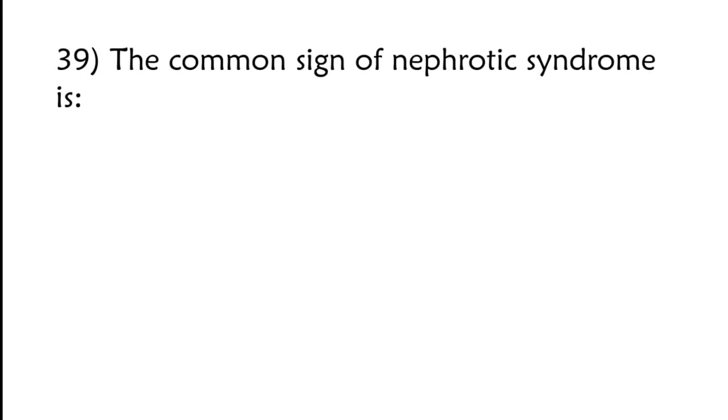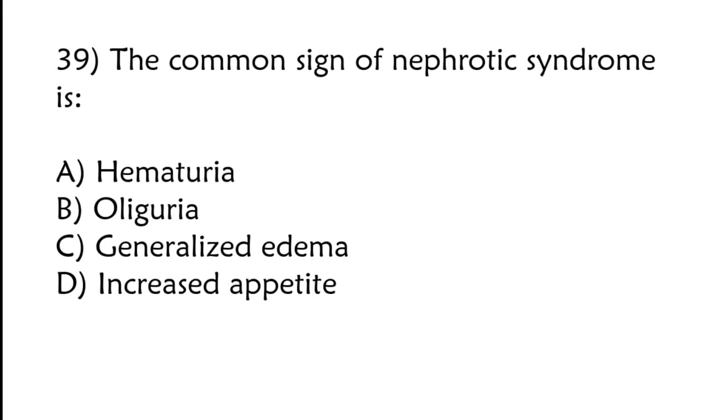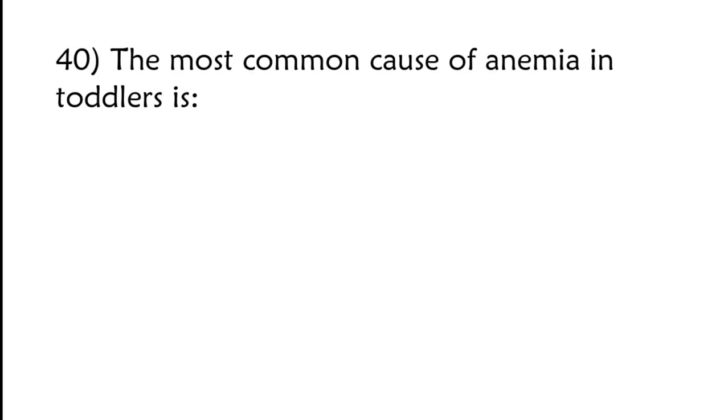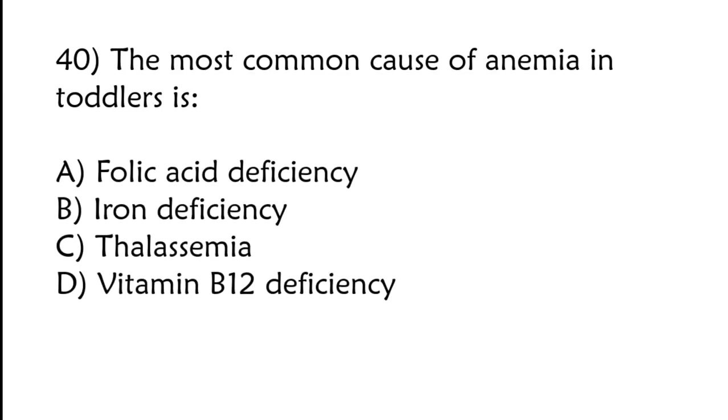The common sign of nephrotic syndrome is hematuria, oliguria, generalized edema, increased appetite. Correct answer is option C, generalized edema. The most common cause of anemia in toddlers is folic acid deficiency, iron deficiency, thalassemia, vitamin B12 deficiency. Correct answer is option B, iron deficiency.